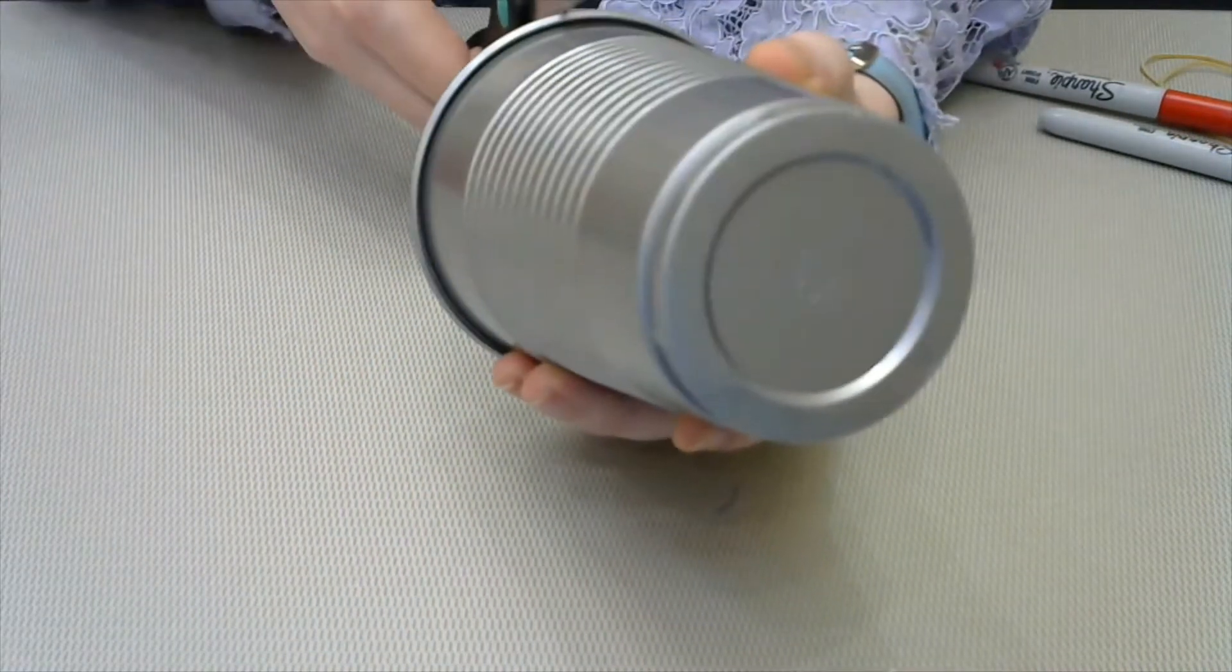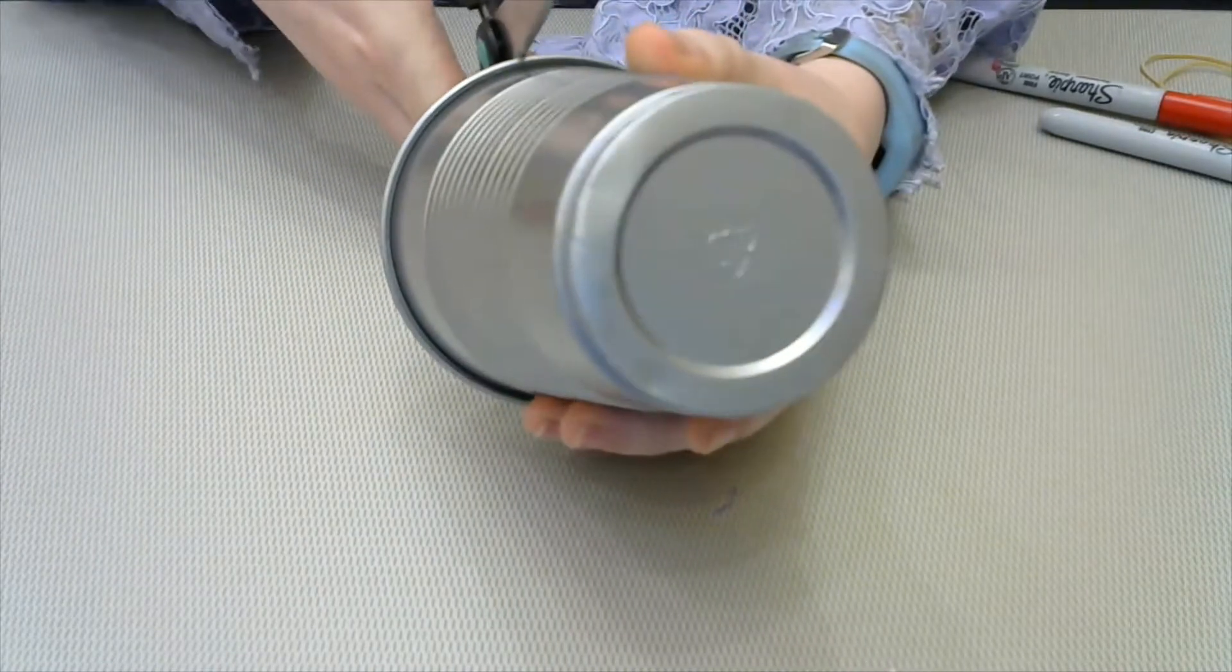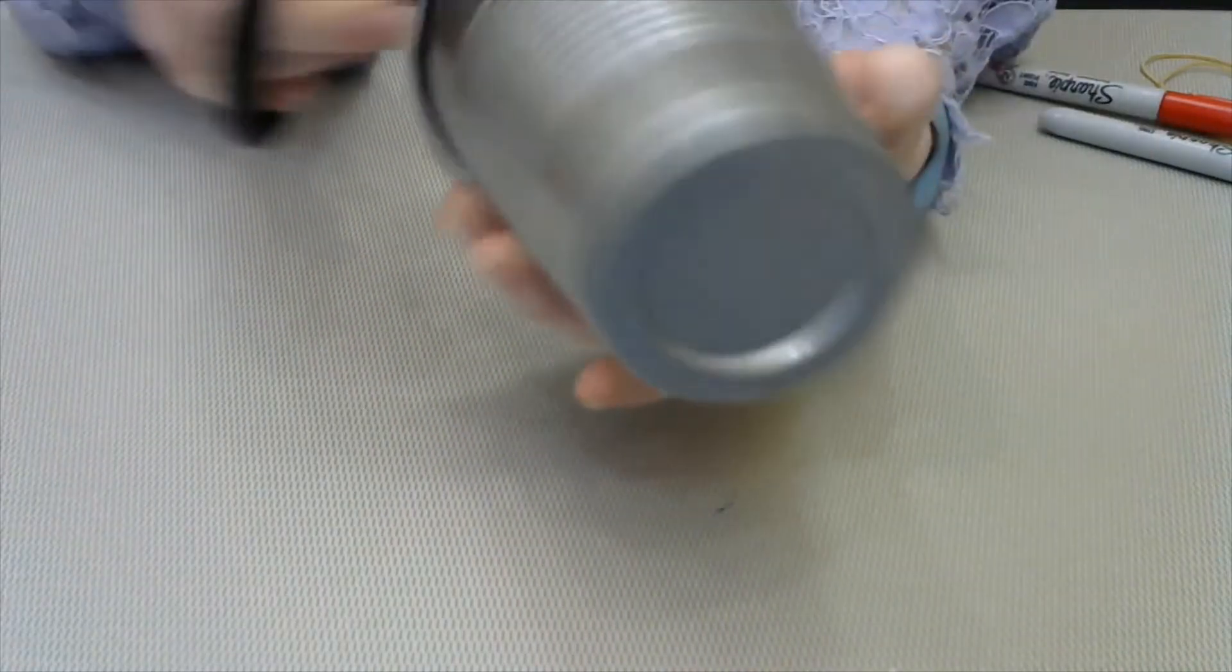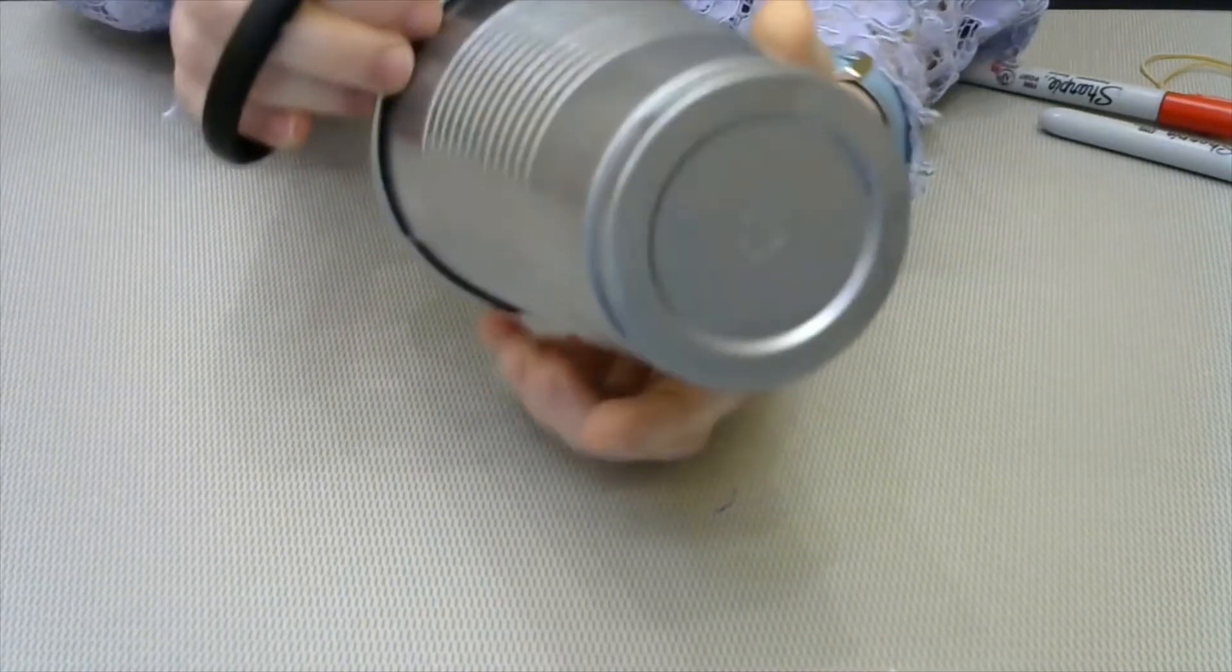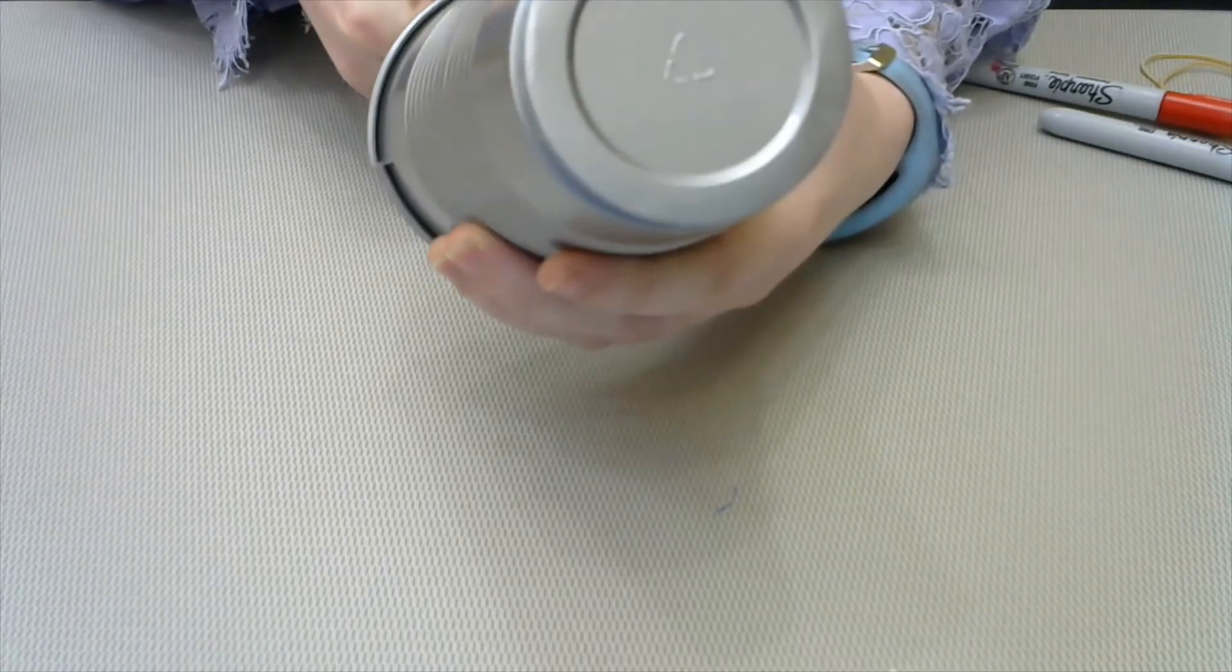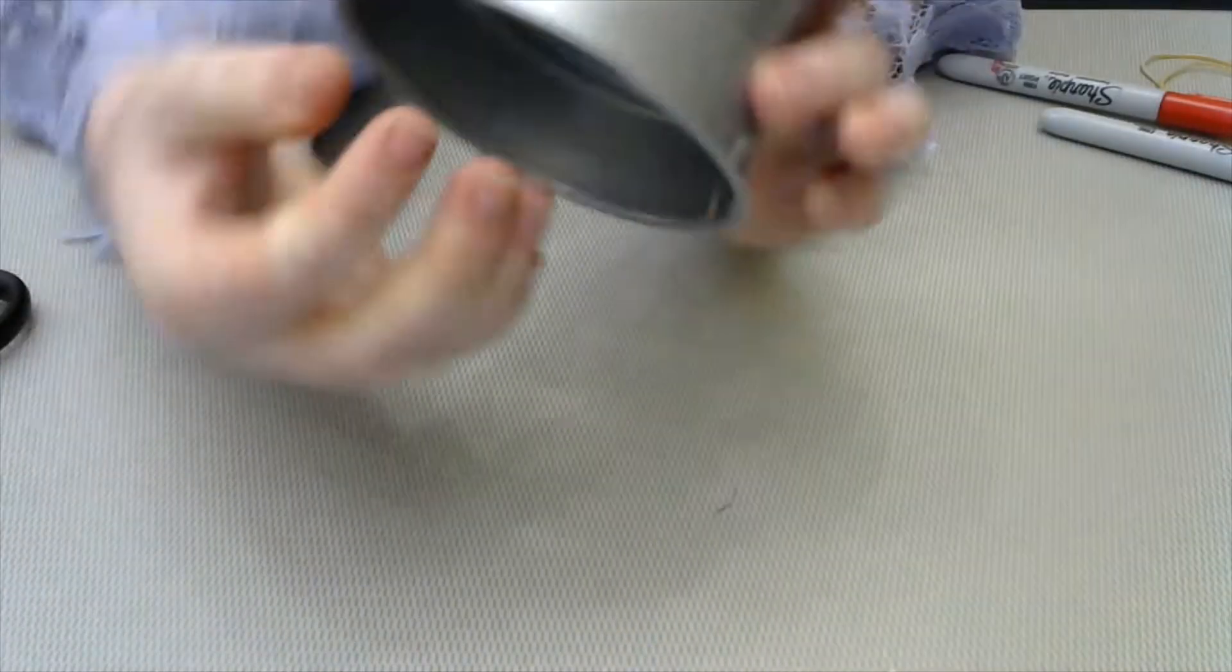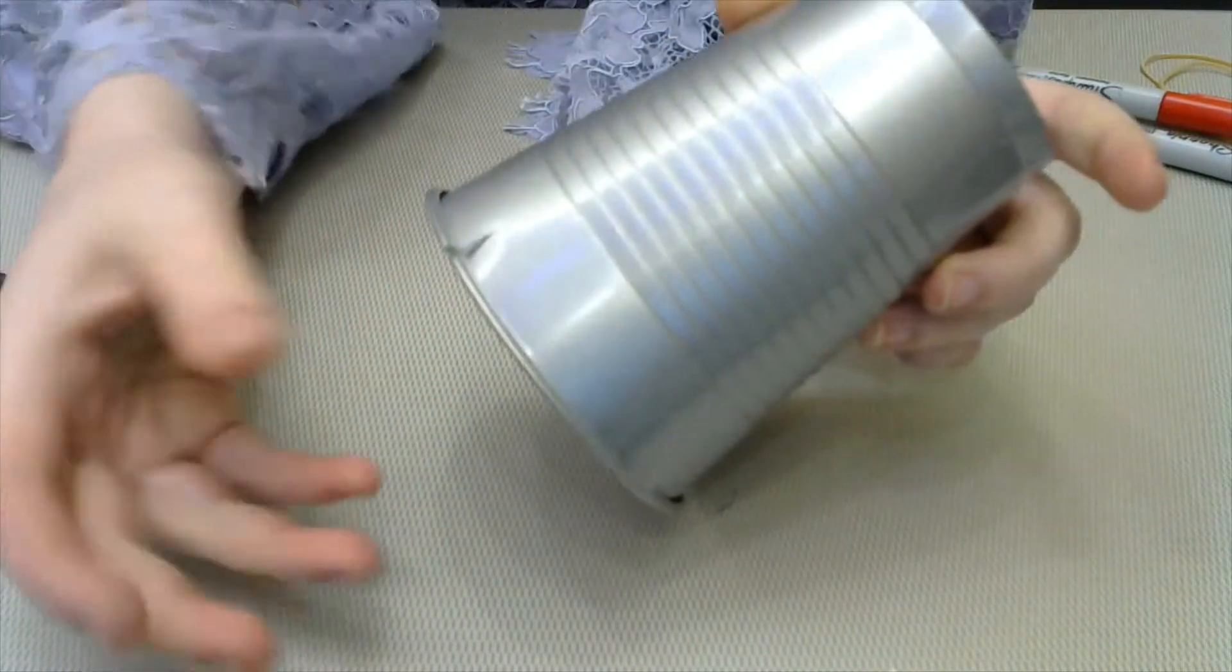This is where we're going to be putting the rubber bands so that our little rabbit will hop. So we're just going to cut around here. I would suggest making shallower cuts because we want the rubber bands being more towards the bottom of the cup when we lace them through. That way it'll hop better.